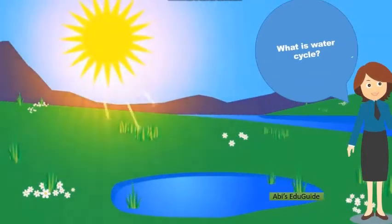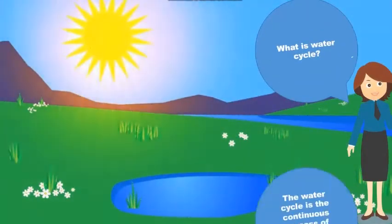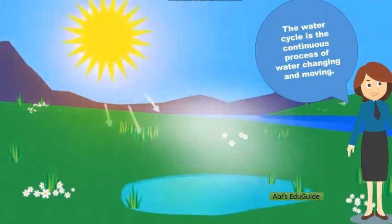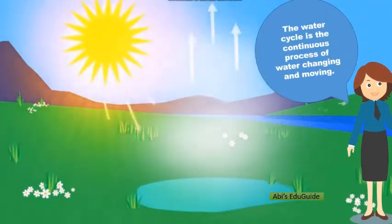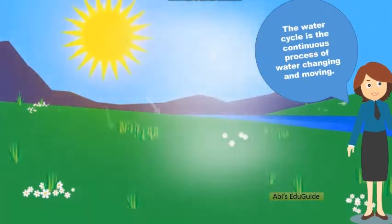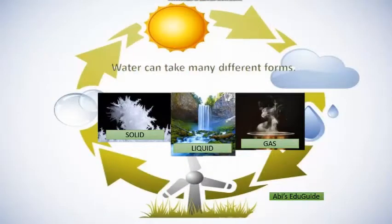What is the water cycle? The water cycle is the continuous process of water changing and moving. Water can take many different forms: solid, liquid, and gas. The solid form of water is ice, liquid is water, and the gaseous form is water vapor.